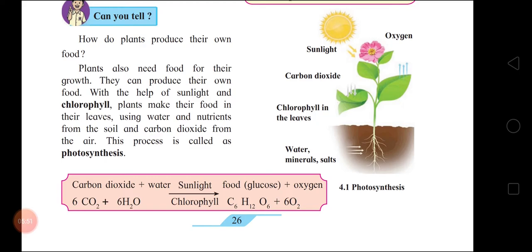This question can come for your exams — explain the process of photosynthesis. You have to draw and label the diagram. In photosynthesis: oxygen, sunlight, carbon dioxide, and chlorophyll in the leaves — that's why leaves are green. Water, minerals, and salts come from below. Carbon dioxide CO₂ plus water H₂O, with the help of sunlight and chlorophyll, produce glucose food plus oxygen. The glucose formula is C₆H₁₂O₆.